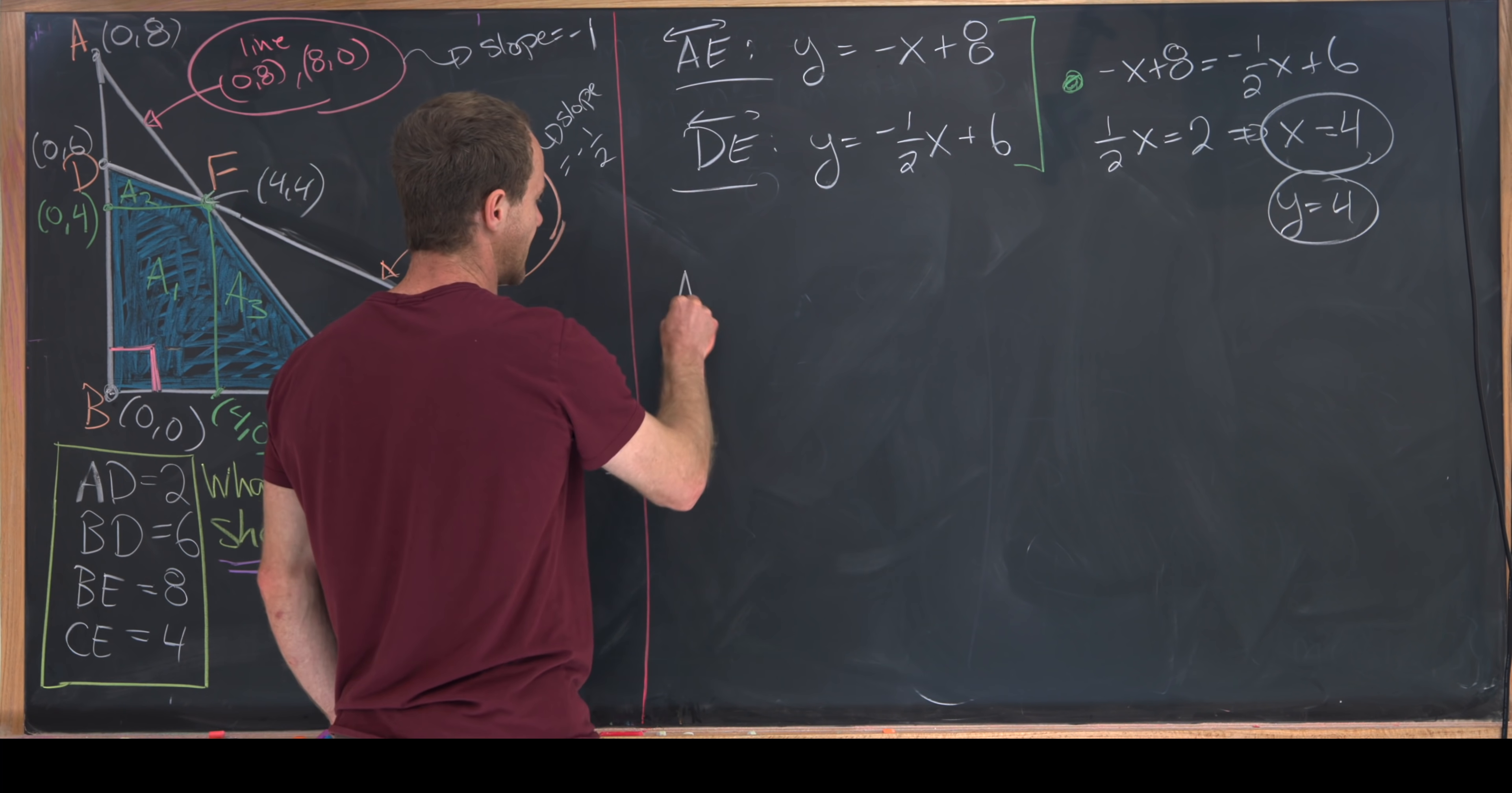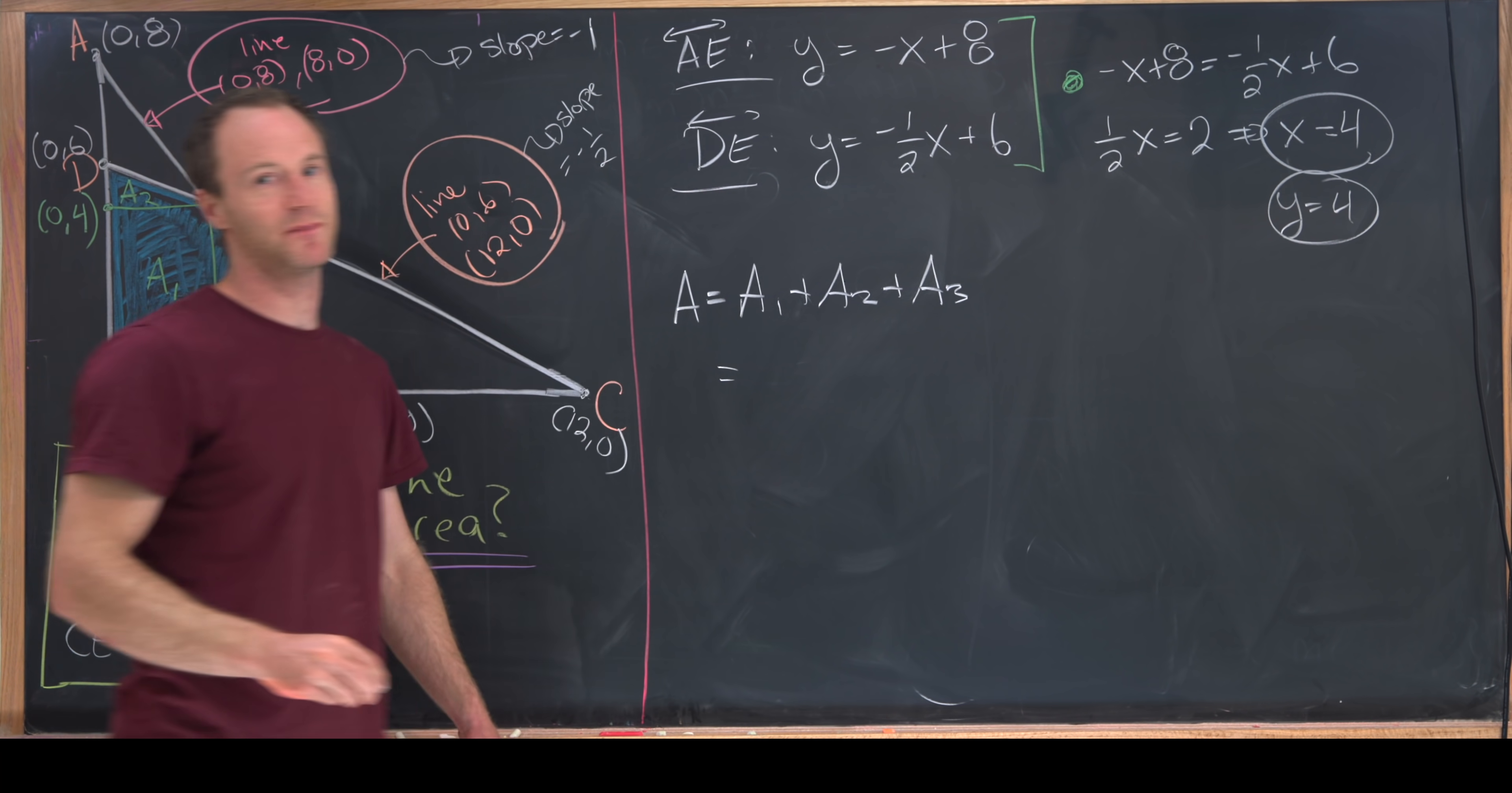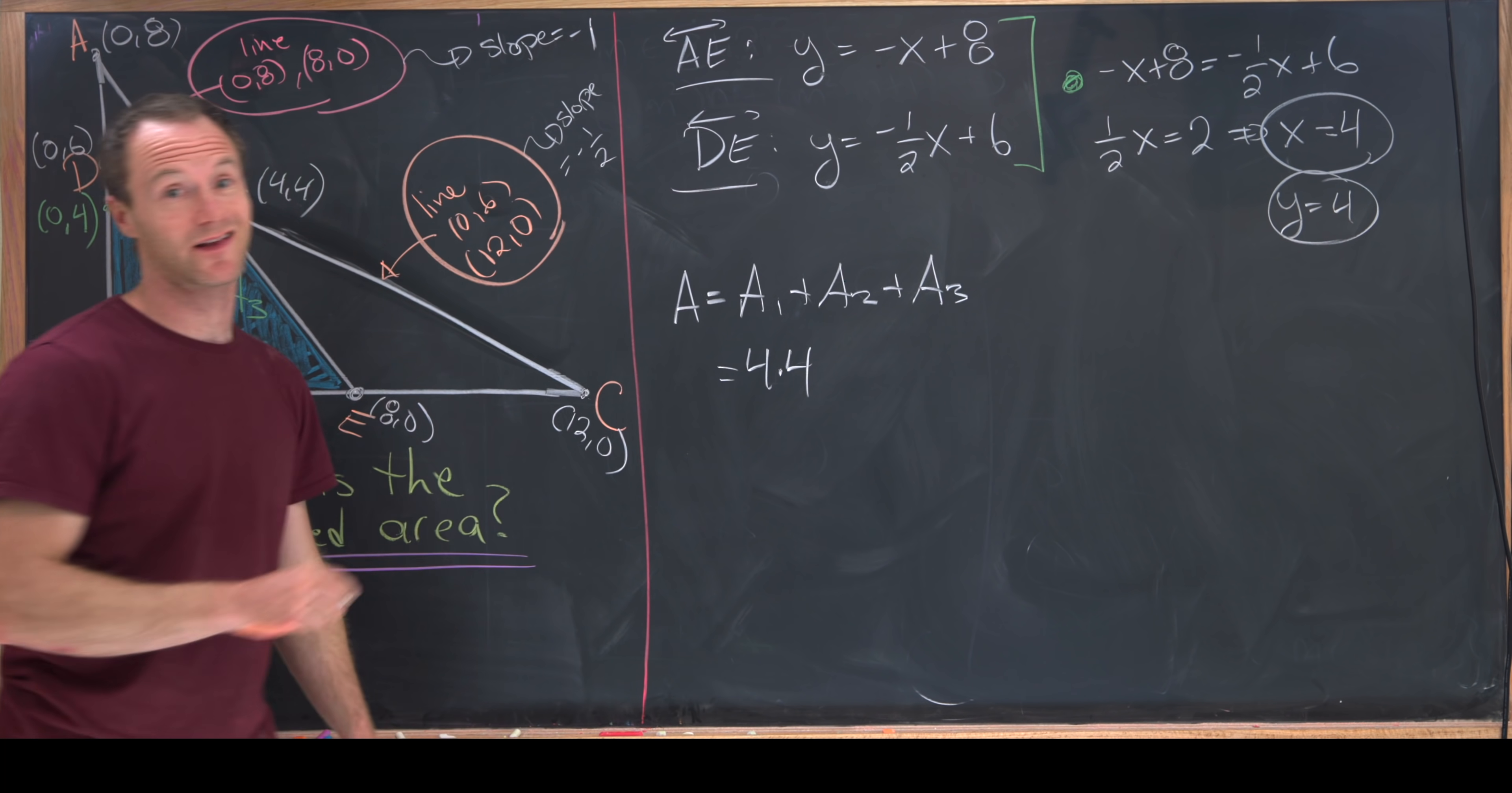Let's notice that our total area will be equal to the sum of these three areas. Now we just have to calculate each of those one at a time, and that shouldn't be too hard because those are standard shapes. Notice the area of region 1 will be 4 × 4 because it's a square with side length 4.